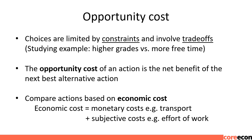When we are thinking about choices, we have to think about the concept of opportunity cost. Choices are limited by constraints or scarcity — we cannot have everything we want, such as 100 on the final grade and 24 hours of free time. We have to trade off some free time for a higher grade. The opportunity cost of an action is the net benefit of the next best alternative action. A common example is the opportunity cost of attending college, which includes not only financial costs such as tuition, books, room and board, but also the time spent in college when you could be working or enjoying free time.